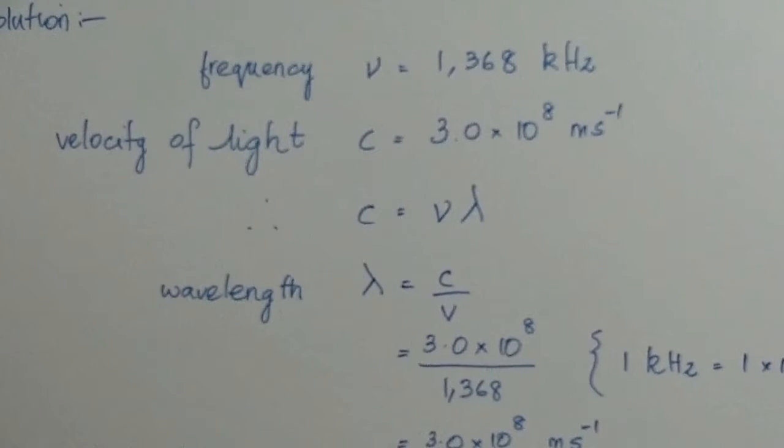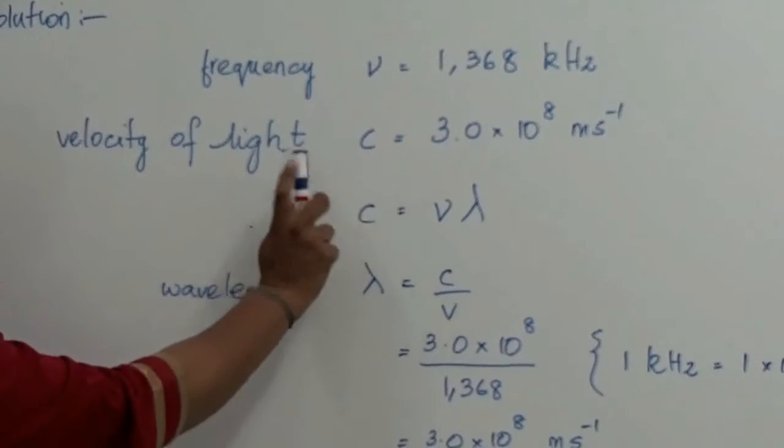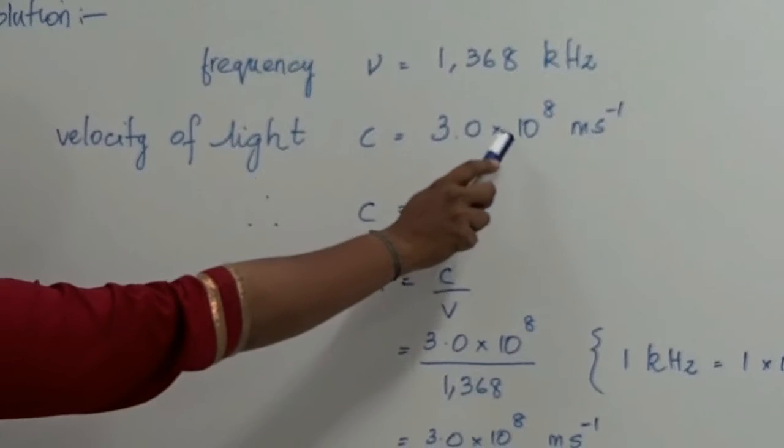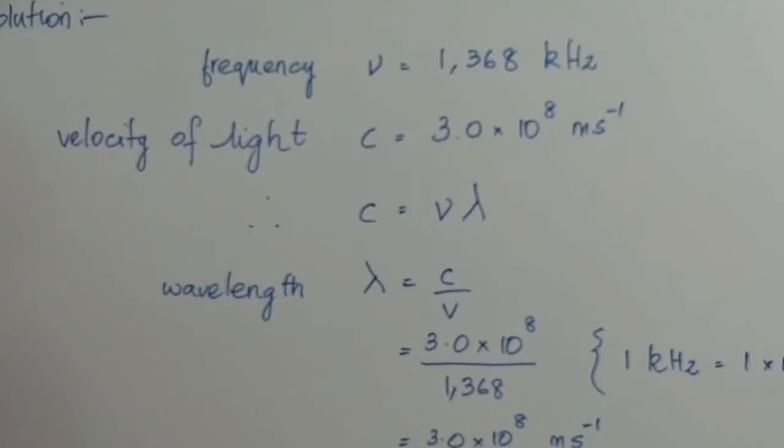Next, we know that the velocity of light C is 3.0 times 10 to the power of 8 meter per second.